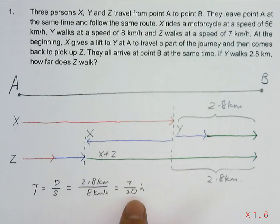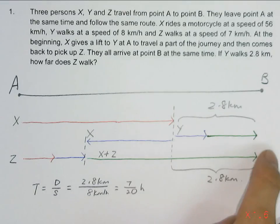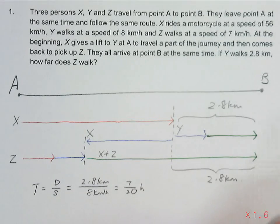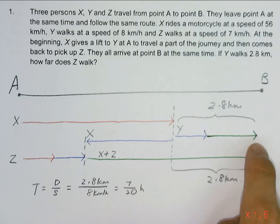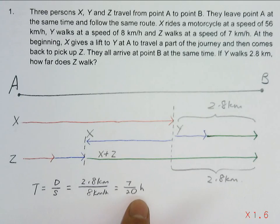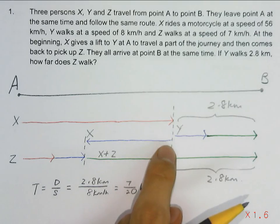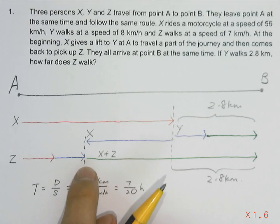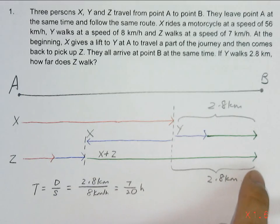So this 7 over 20 hour will represent the time taken for the blue arrow and the green arrow, which is the second part of the journey and the third part of the journey. Now for the same time, 7 over 20 hour, X moves back following this blue arrow to this meeting point, picks up Z and moves all the way to B.